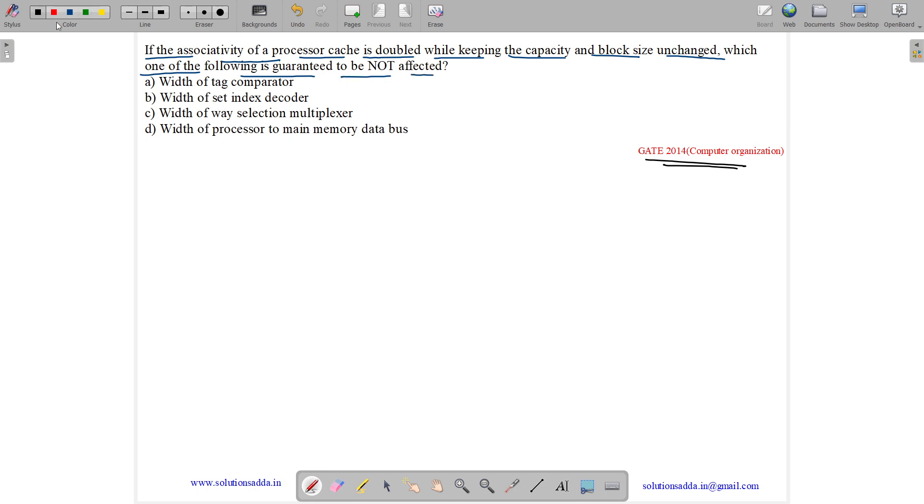So see, we have a cache like this. Cache is divided into some sets, so this is our set, this is one more set, this is one more set. Let us see that the associativity of each cache is, it is three-way associative cache, which means three blocks combined to a set. So this is three-way set associative cache. Okay, it looks something like this.